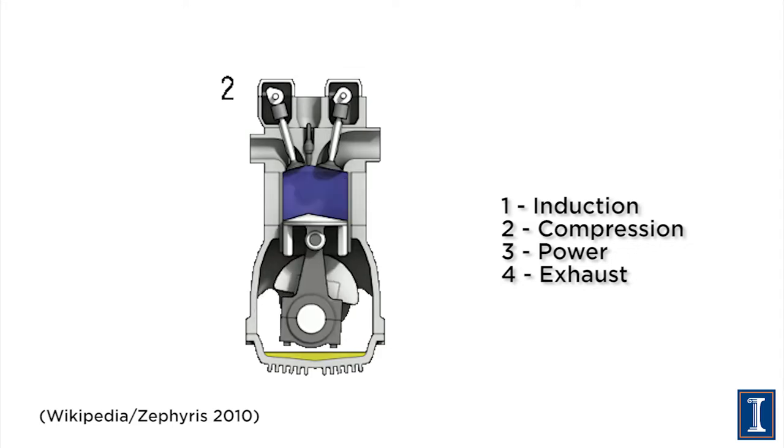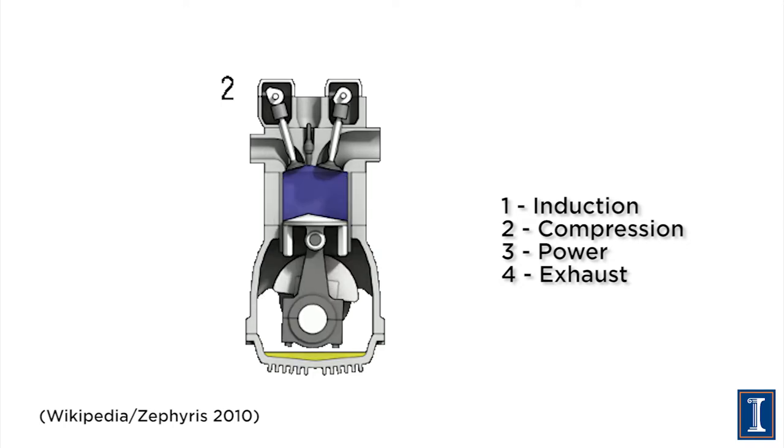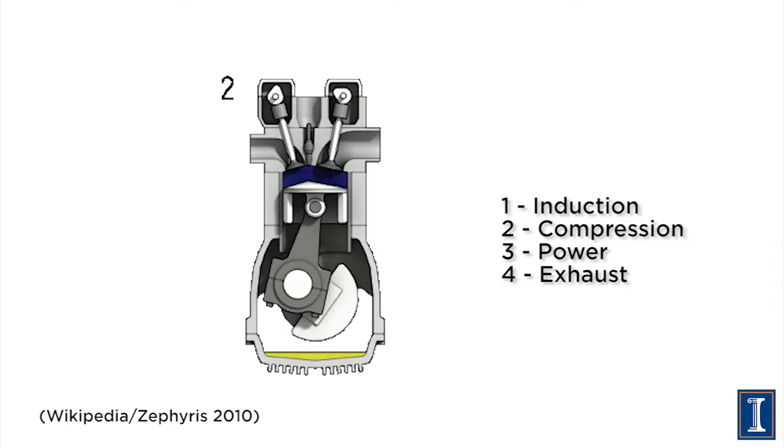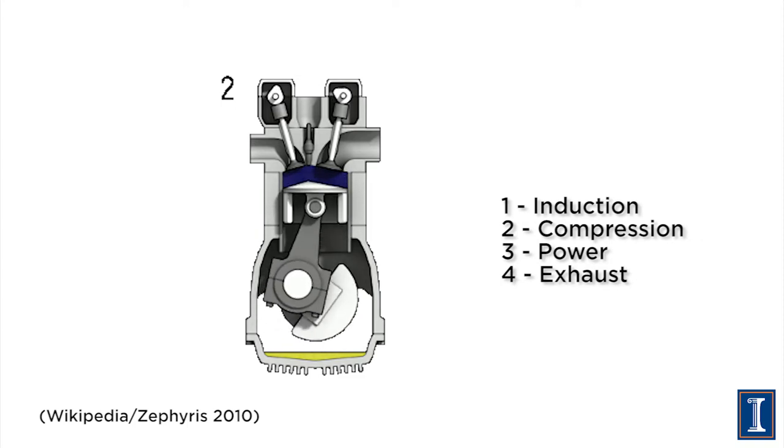The gas and air mixture in the fully open cylinder gets compressed up to the point where we're about to ignite the spark plug. There's a thing called compression ratio — the ratio between the volume when the cylinder is as big as possible and the volume when it's at its smallest. That ratio tells you how powerful the engine is, how much energy it can produce in a given amount of time. The higher the compression ratio, the more powerful the engine.